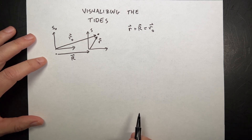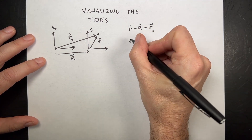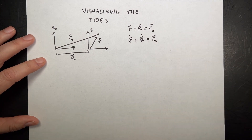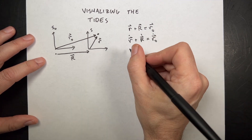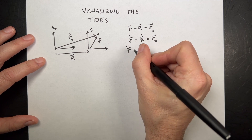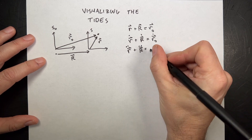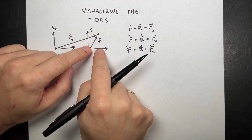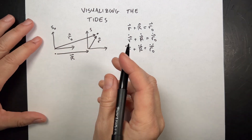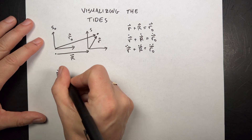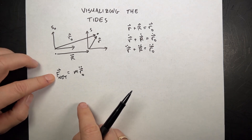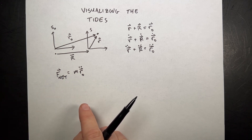Now let's take the derivative of both sides. I'll write this as R-dot plus R-dot equals R0-dot, where dot means the derivative with respect to time. Taking the derivative again: R-double-dot plus R-double-dot equals R0-double-dot. Now we can make some approximations. If I want to use Newton's second law in this non-inertial reference frame, Newton's second law says that the net force equals M times R0-double-dot — the net force on an object is proportional to its acceleration.